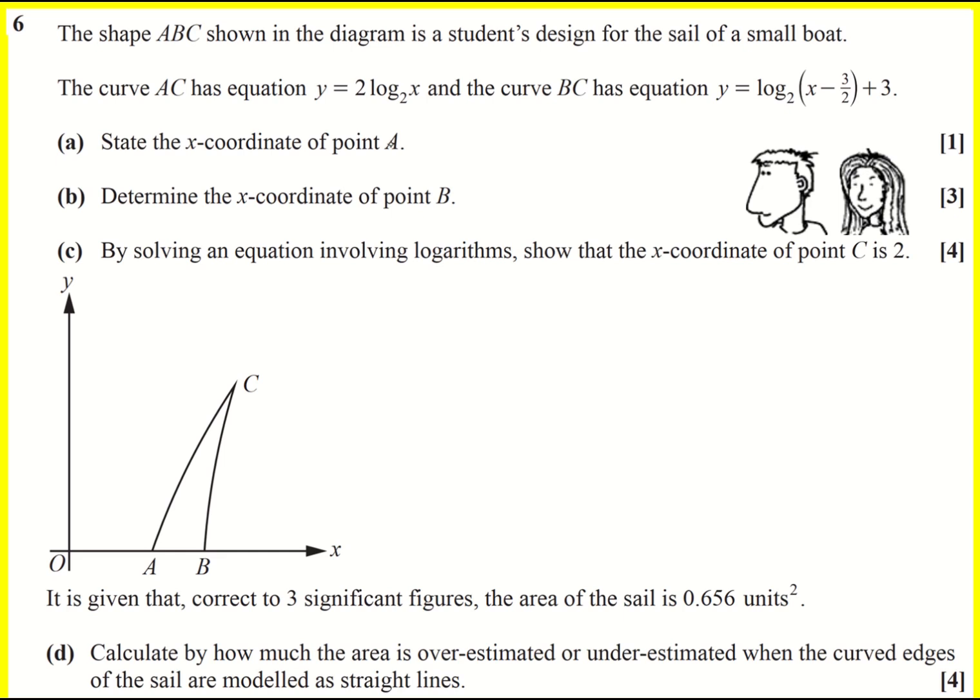First, we're asked for the x-coordinate of point A. So AC is given by this equation, and where A is, we've got y equal to 0. So I need to set 2 log base 2 of x equal to 0, which means log base 2 of x equals 0. One thing to be aware of is that all logs equal 0 when x equals 1. You could alternatively rewrite this in exponential form, so x would be 2 to the 0, which gives you 1.